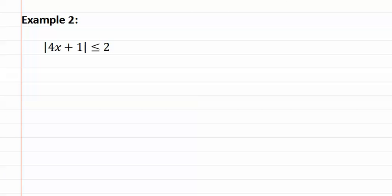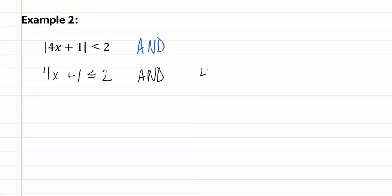Here's example two. It is once again a less than, so it is an and statement. We start by writing four x plus one is less than or equal to two, and then we write four x plus one is greater than or equal to negative two.